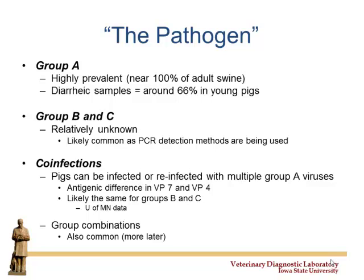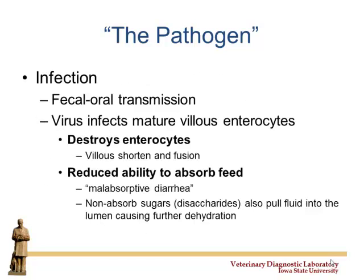The infection chain: basically it's fecal-oral transmission, just like PED. It attacks mature enterocytes, destroys them, shortens villi, and you get villus fusion — therefore reduced ability for that animal to actually absorb feed. You get a malabsorptive diarrhea. Milk proteins draw more water into the lumen, making diarrhea even worse. Rotavirus also has a toxin, the NSP4 toxin, which is potentially similar to heat stable E. coli toxins, adding to diarrhea in certain instances.